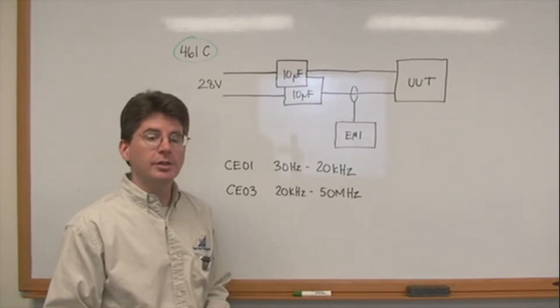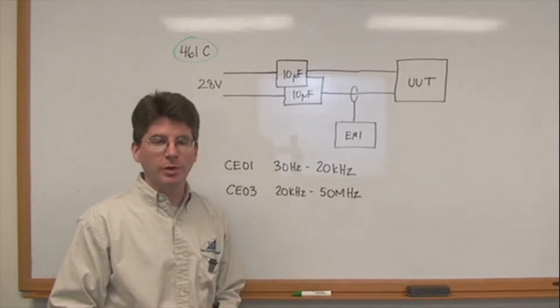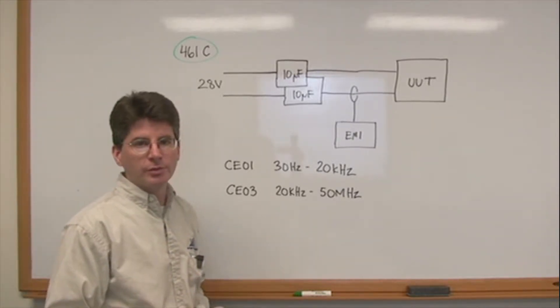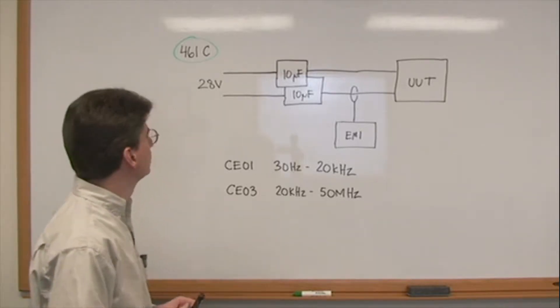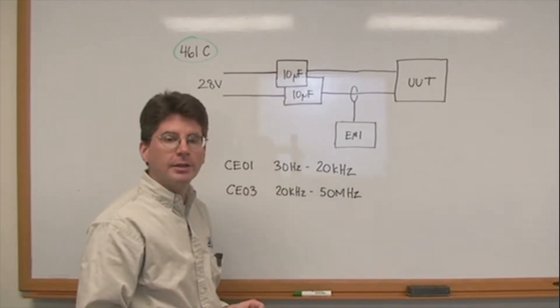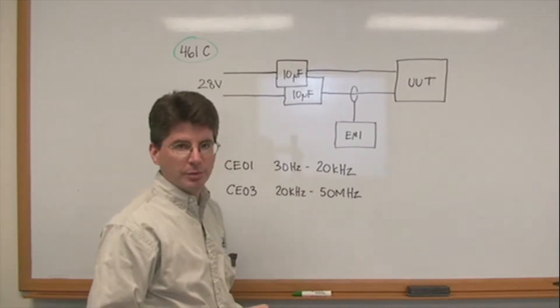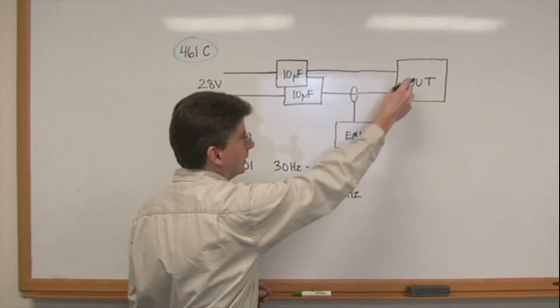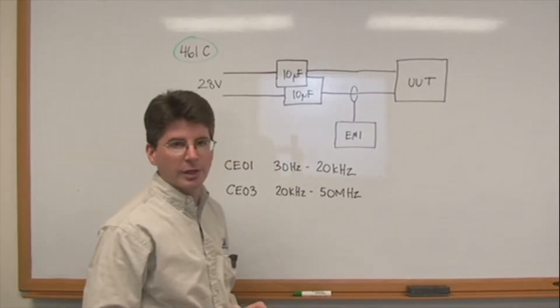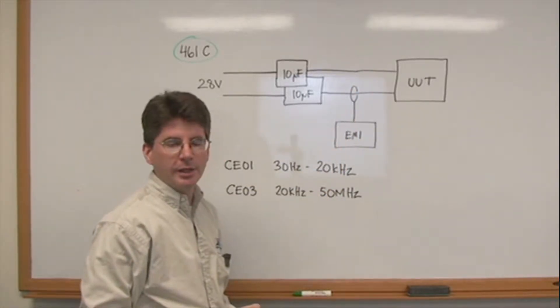This is the setup for measuring conducted emissions according to MIL-STD-461 revision C. This is an older method and it's similar to what is used for DL160 conducted emissions. In revision C we use a 10 microfarad feed-through capacitor and a clamp-on current probe to measure the conducted emissions on the input line to the UUT or unit under test, which is the DC-DC converter and associated EMI filter. So the current probe will feed into the EMI analyzer.